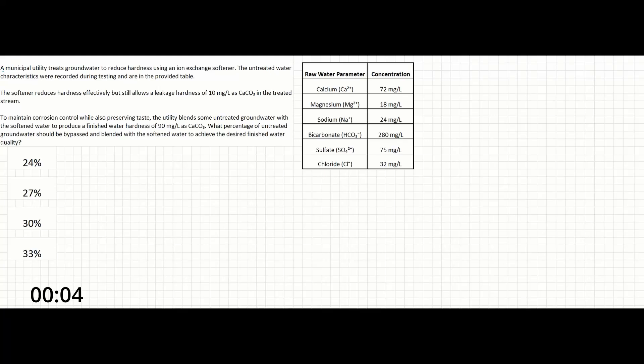In this problem, a municipal utility treats groundwater to reduce hardness using an ion exchange softener. The untreated water characteristics were recorded during testing and are in the provided table.